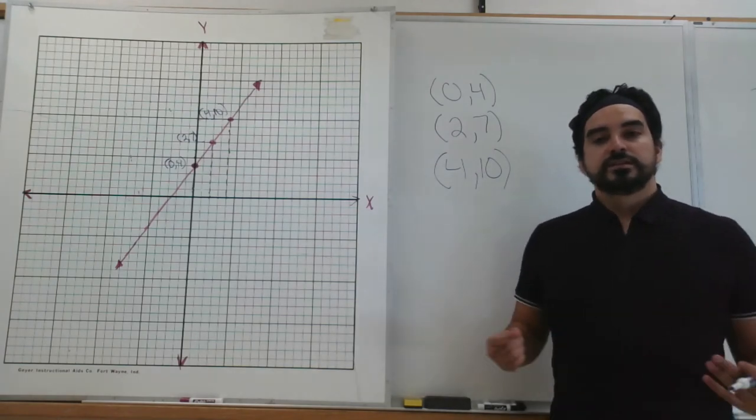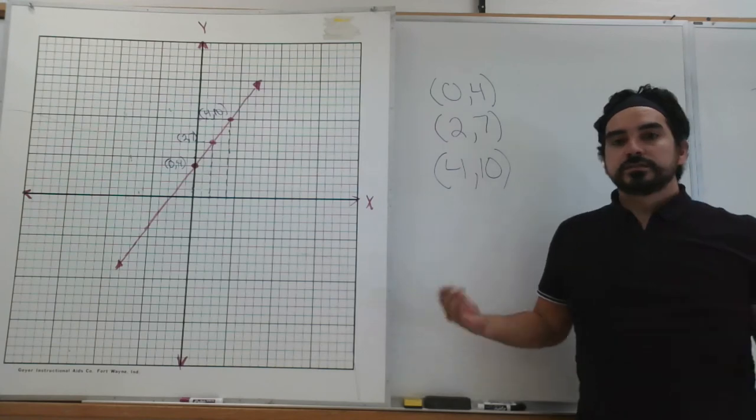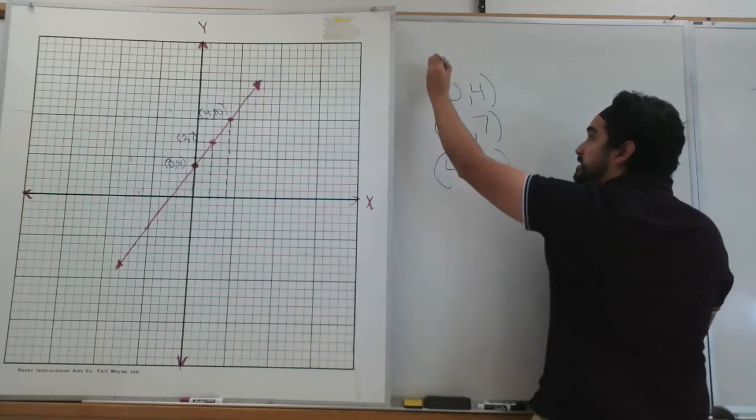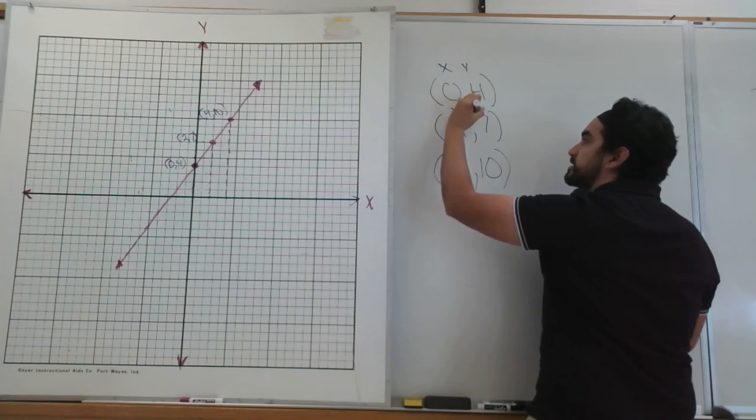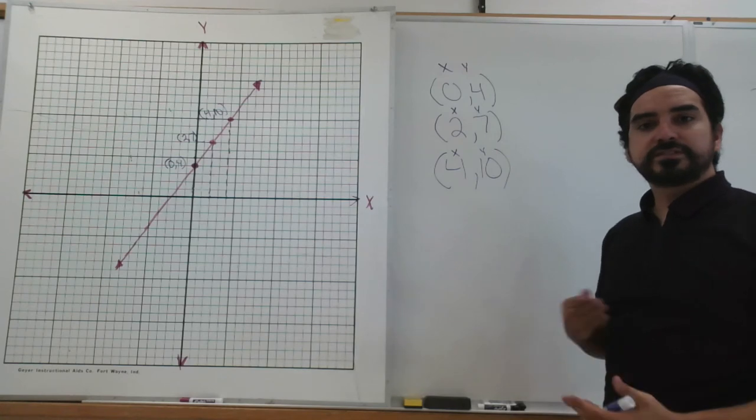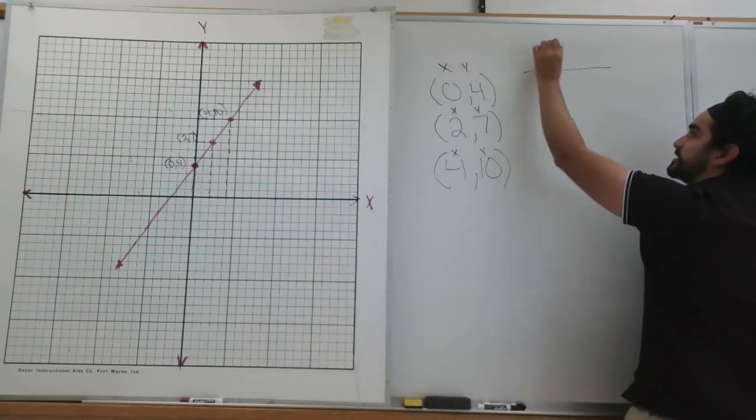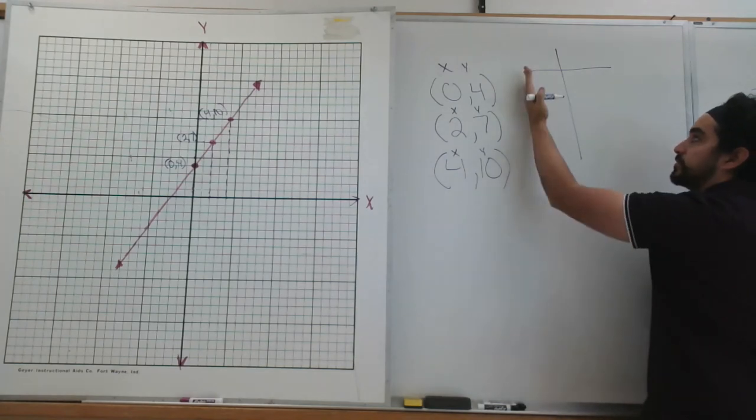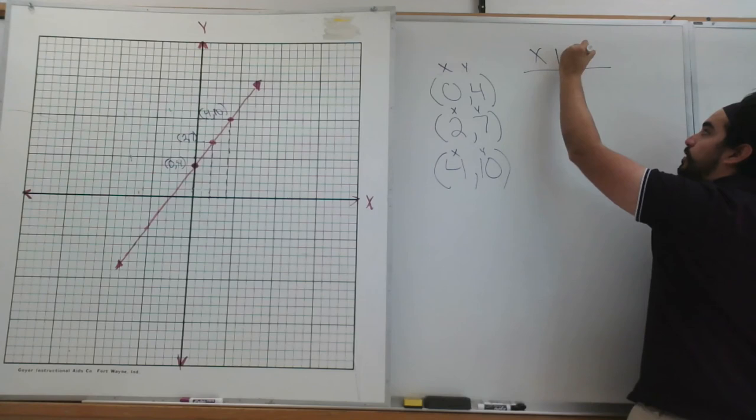All right. Now that we got our points, we could go ahead and put them into a table. So we know that this is my x, this is my y for each point. So inputting them into a table should be pretty straightforward because all we're going to do is draw a t. On the left side, I'm going to put x. On the right side, I'm going to put y.